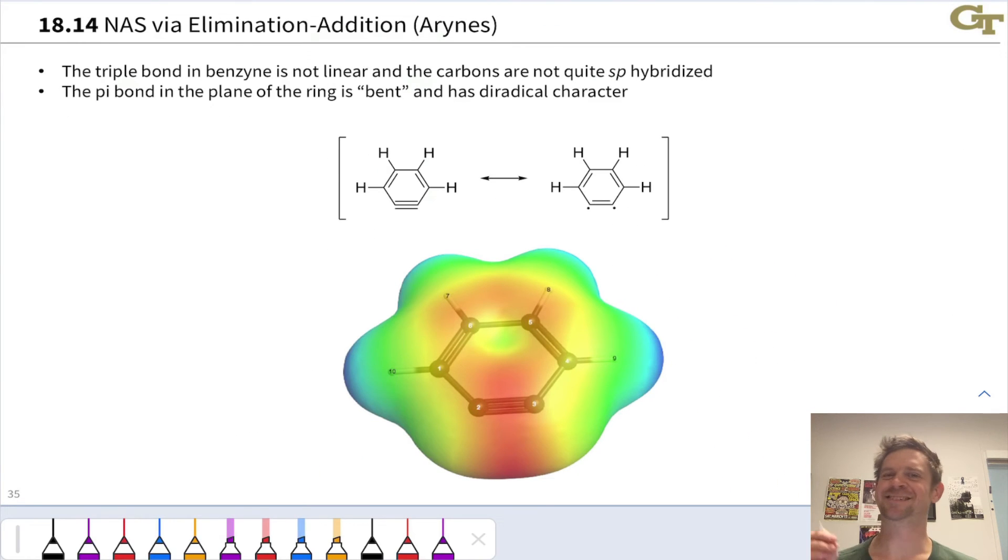The triple bond in benzyne is not quite a triple bond because of the severe strain that would come along with linear geometry inside a six-membered ring. Those triply bonded carbons are actually bent in benzyne, and this leads to really a diradical kind of structure as opposed to a bona fide triple bond. The carbons are not quite sp hybridized, they're more sp2, and the triple bond kind of looks like two electrons that are not exactly paired. That second pi bond is a very weak pi bond.